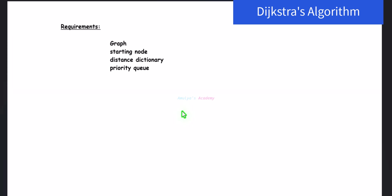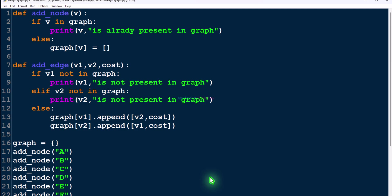First let's see the requirements. To write a function to find the shortest distance from a node to all other nodes in the graph using Dijkstra's algorithm, we need a graph — specifically a weighted graph — and next we need a starting node, also called a source node.